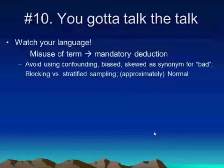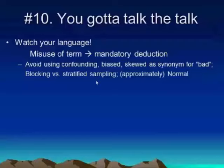A number of students tend to throw around words like 'confounding,' 'biased,' or 'skewed' in everyday language, but not in their technical statistical sense. When the reader sees those words, they're trained to read them exactly as written. Another couple of examples involve distinguishing blocking in experiments from stratified sampling — we've both seen those terms used interchangeably when they shouldn't be.